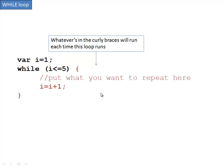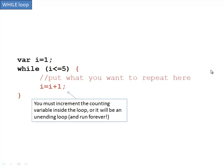That's where you would put whatever you'd like to repeat. But the other really important thing you need to do inside of a while loop is to increment the counting variable. If you don't do this, or if you forget to do this, it could be an unending loop and it would run forever.